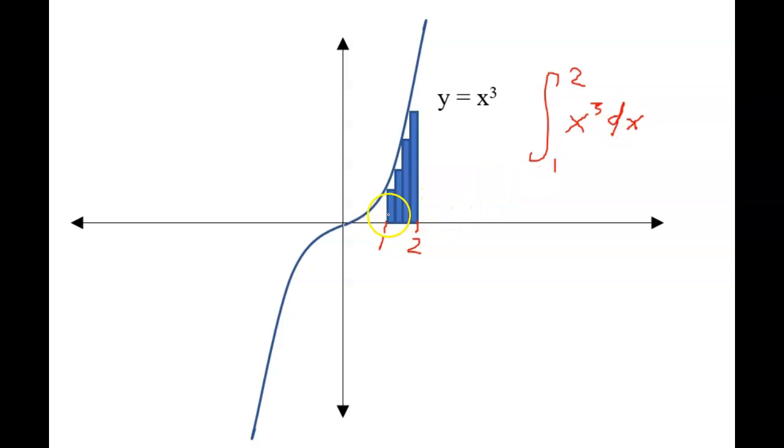And the key here is we're not adding up four rectangles or five rectangles. We're adding up an infinite number of infinitely small rectangles. And that's how you get the area under a curve.